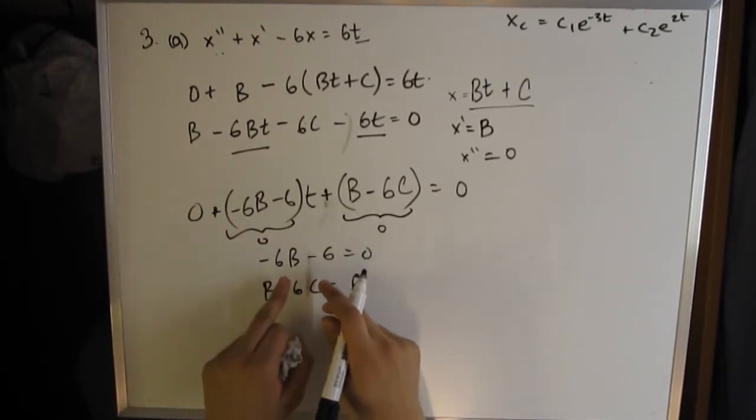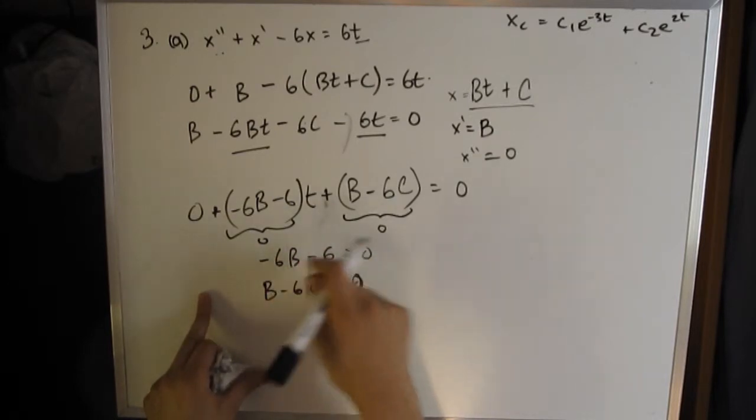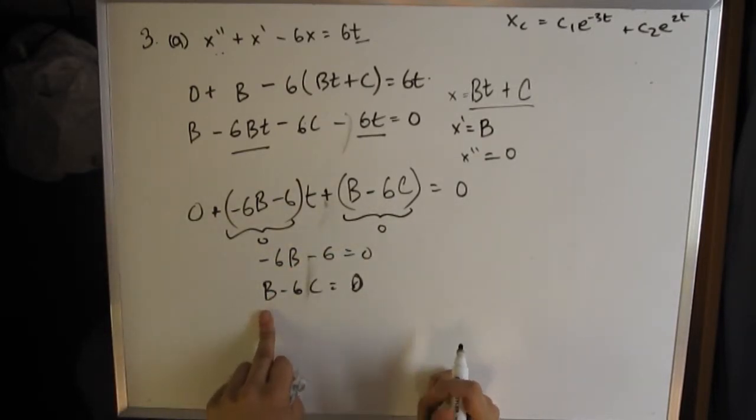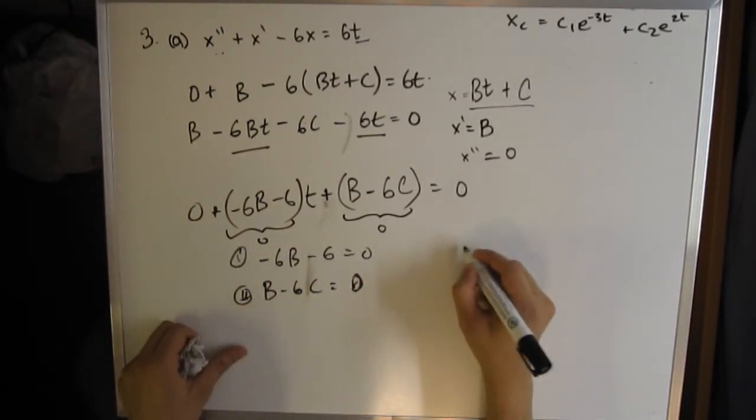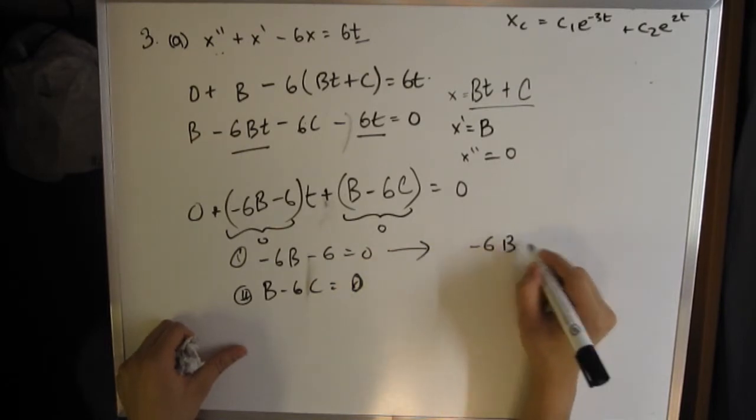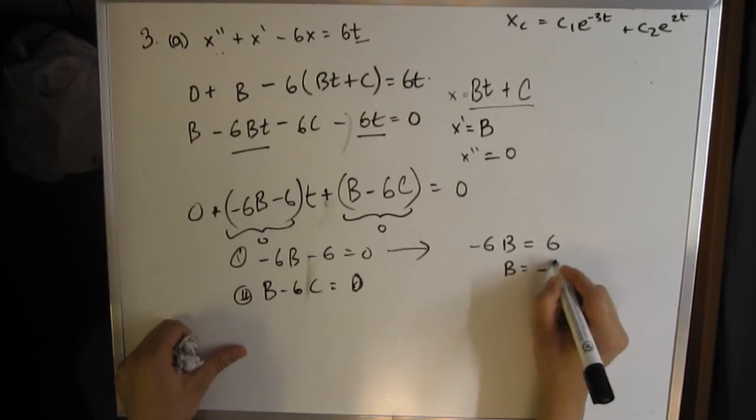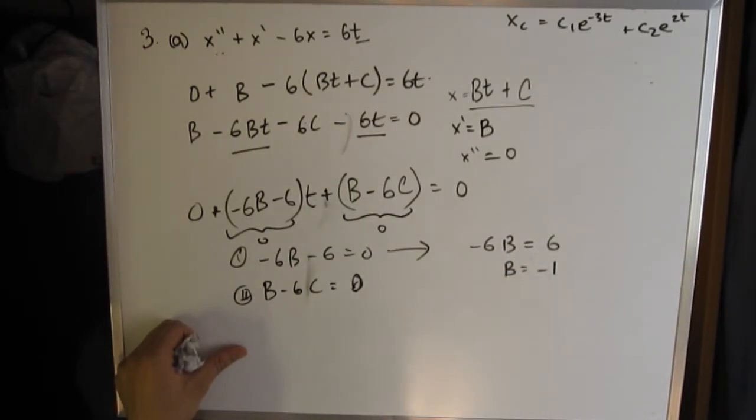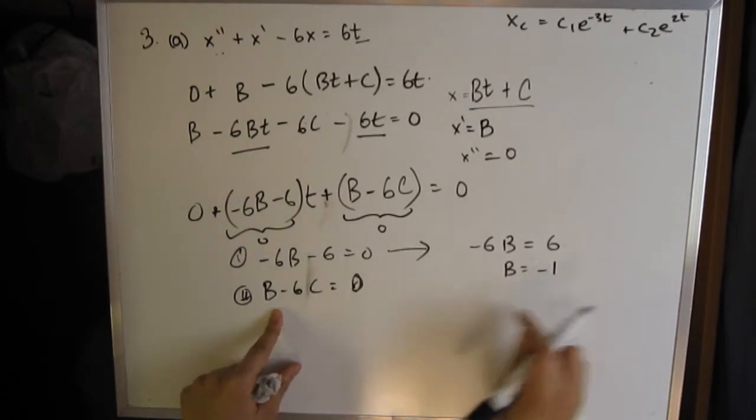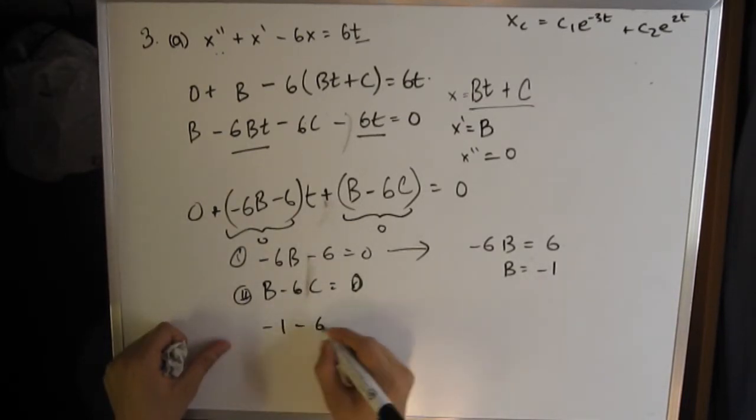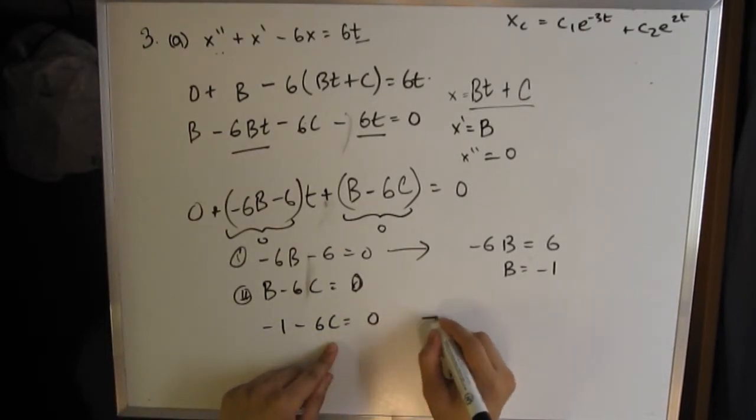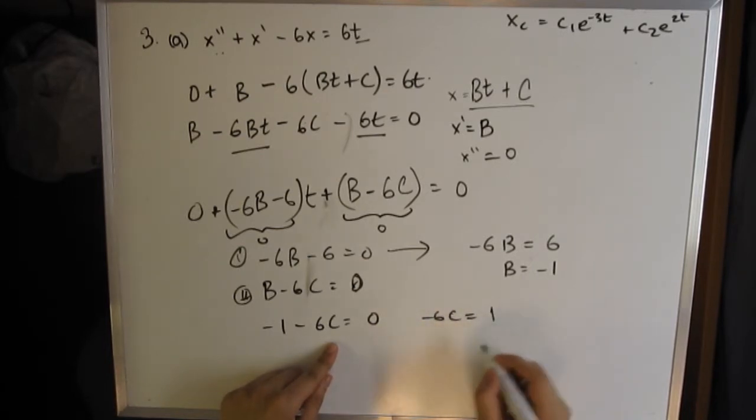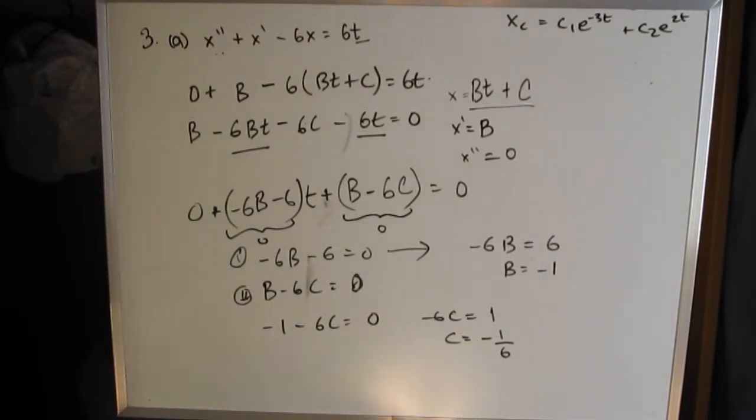Label these 1 and 2. Solve 1 first since it's easiest. -6b = 6, so b = -1. That's our first value. We substitute this in: -1 - 6c = 0. Take the -1 to the other side: -6c = 1. So c = -1/6. Now we've solved for both equations.